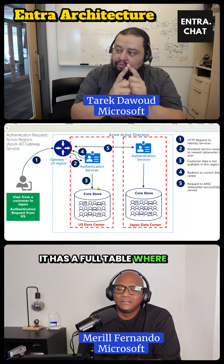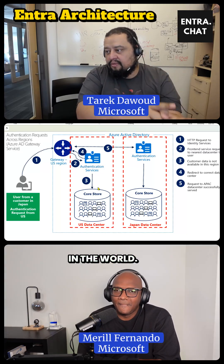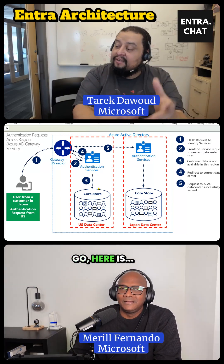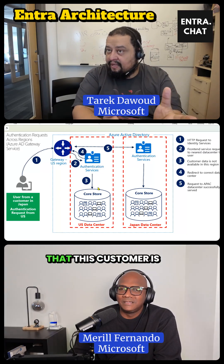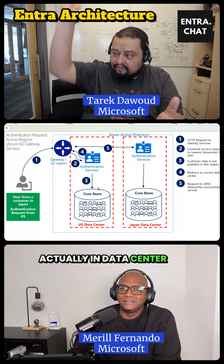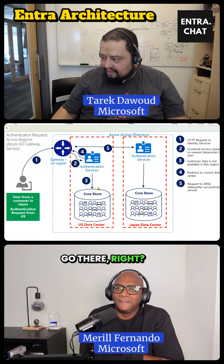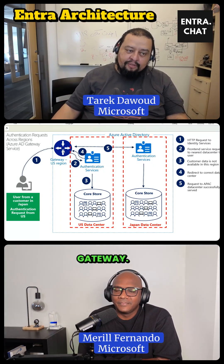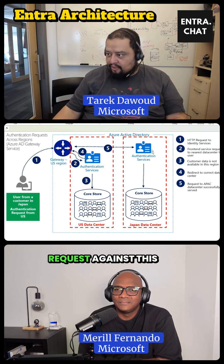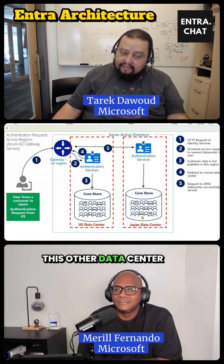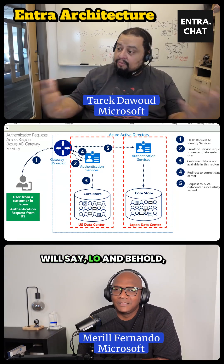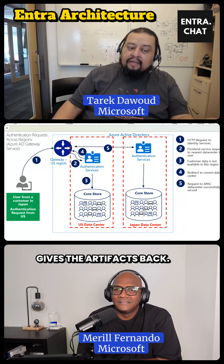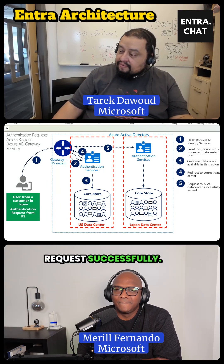It has a full table where every other customer is in the world. So it's able to answer and say, here you go — this customer is actually in data center three, go there. So then ESDS will send that response back to the gateway. The gateway will try the request against this other data center, which will say lo and behold, I actually know what this customer's data is, gives the artifacts back, and the service serves the request successfully.